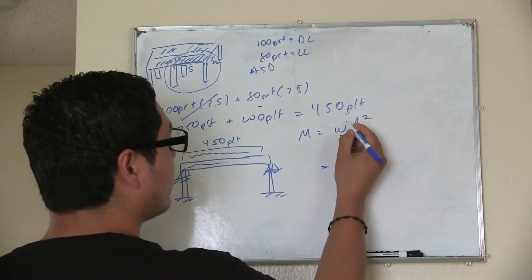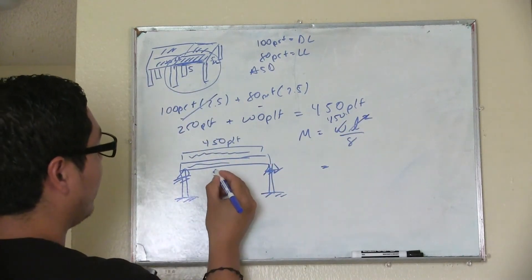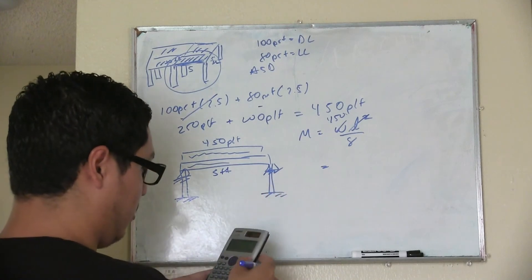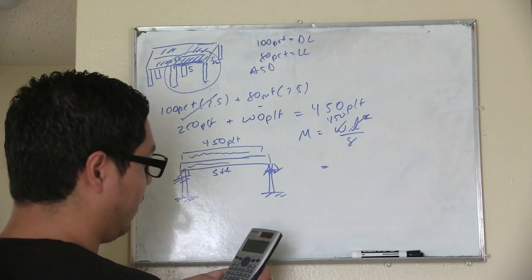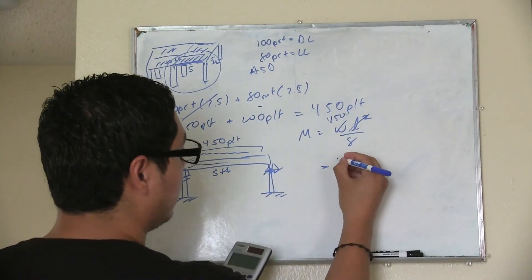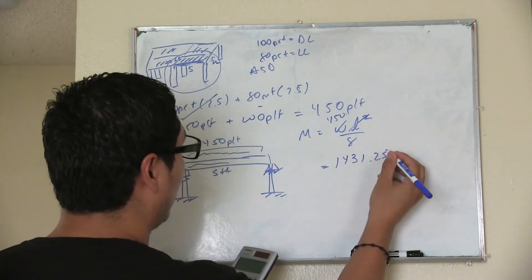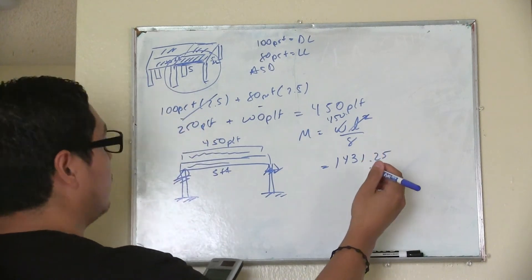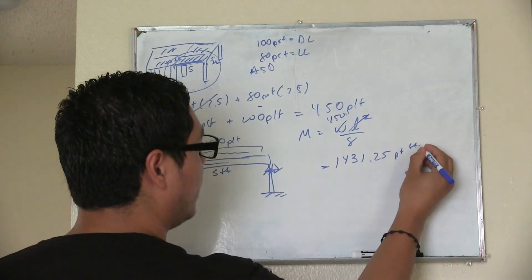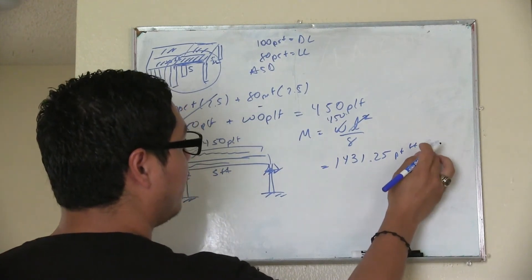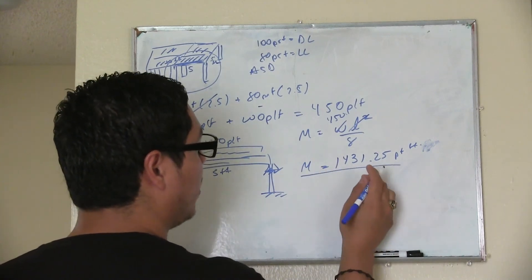So you're going to have a moment of 425. I know these are pound feet, something like that, pound feet. This is going to be your moment. So basically your beam has to be able to support this moment.